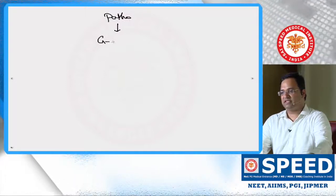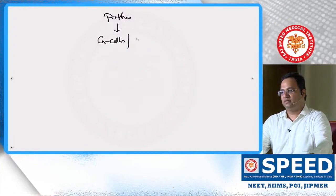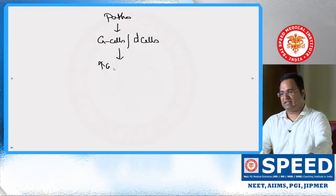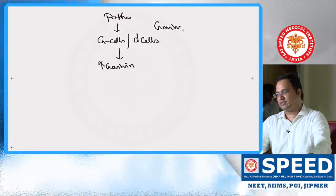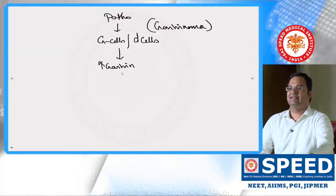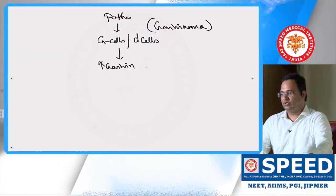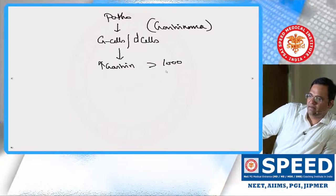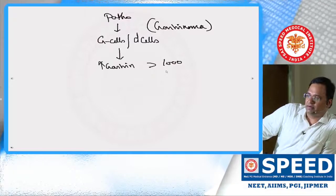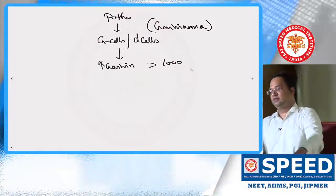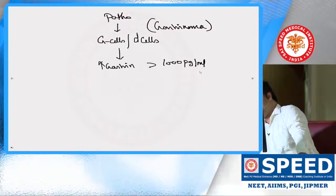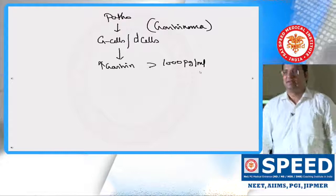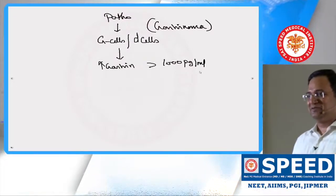Regarding pathophysiology, gastrinomas are produced from G cells of the stomach or D cells of the pancreas. They produce increased levels of gastrin — gastrinoma produces gastrin levels greater than 1000 picograms per ml. These units and numbers are very important for your national board exam.